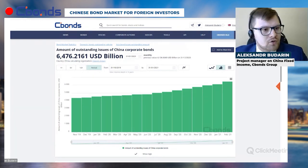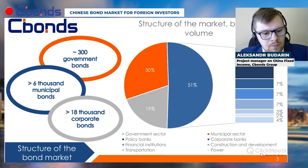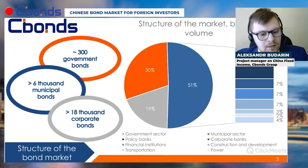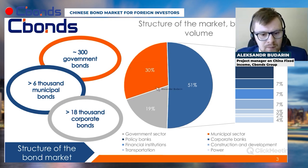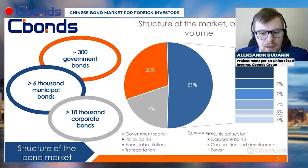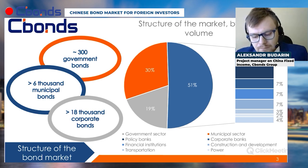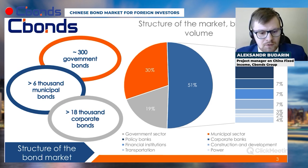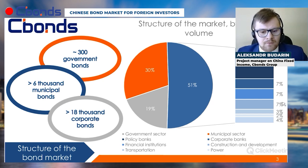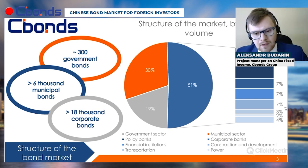Looking at the structure of the bond market, it is represented by 20 percent government bonds, 30 percent local government bonds, and over 50 percent corporate bonds. Notably, 21 percent of all issuance volume is represented by policy banks, which are quasi-government institutions responsible for policy realization. That is 14 percent for banks and financial institutions, then 7 percent for construction and development, and other sectors.